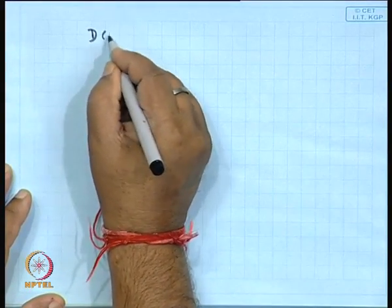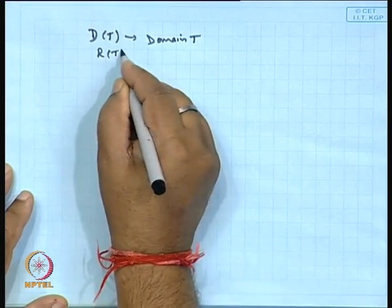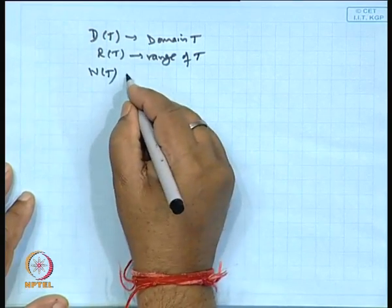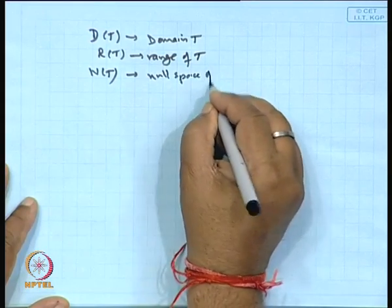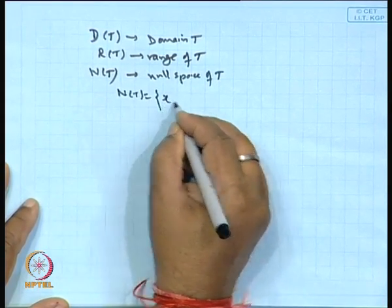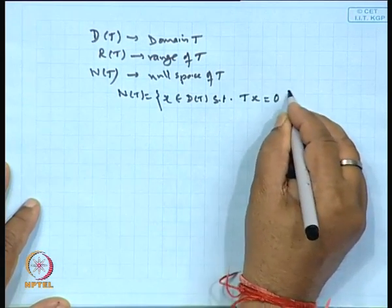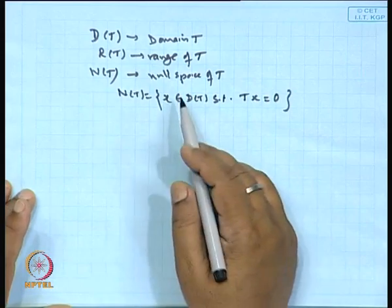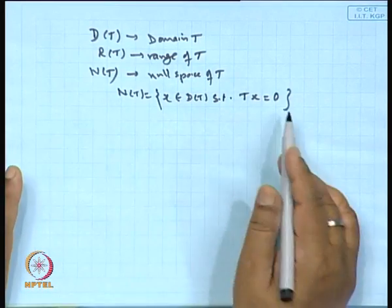We will use the notation D(T) for domain of T, R(T) for range of T, and N(T) — a new notation — for the null space of T. The null space of T is the set of all points x in D(T) such that T(x) = 0. We also call it the kernel of T, but since kernel will be used for functionals, we will use the term null space.